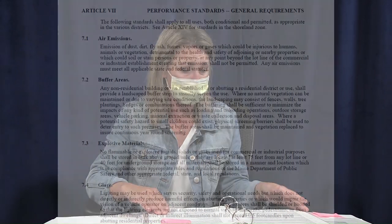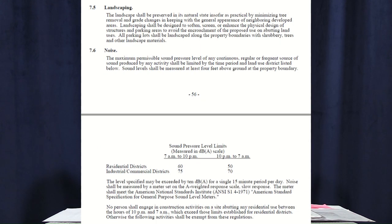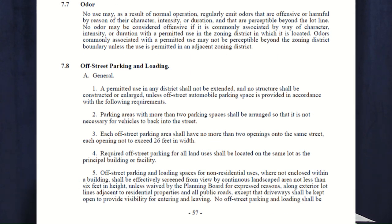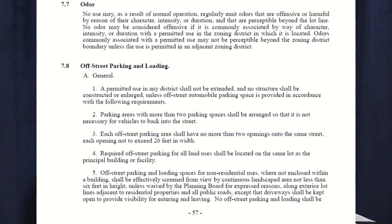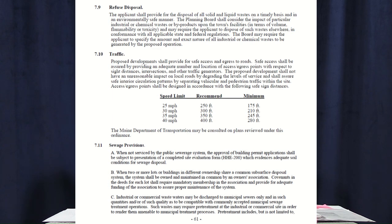Joe goes to the town planner, they fill out the application together, and we sit down as a board for an application meeting. In the application meeting, we go over the performance standards for a conditional use permit — detailed on page 56 of our land use ordinance. These standards include but are not limited to buffers, glare of lights, landscaping, parking, noise, air emissions, availability of water and sewer, trash disposal, who's going to work there, hours of operation, how many parking spaces are required, and signage.